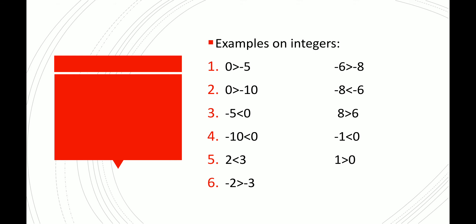Now, some extra examples on integers. From the chart: 0 is greater than minus 5, and 0 is greater than minus 10. Minus 5 is less than 0, and minus 10 is less than 0. 2 is less than 3, but minus 2 is greater than minus 3. Similarly, minus 6 is greater than minus 8, and minus 8 is less than minus 6. 8 is greater than 0.